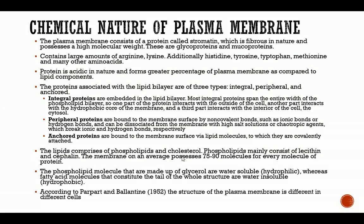Now, what is the chemical nature of the plasma membrane? Every living thing has a chemical composition. The plasma membrane consists of a protein called stromatin, which is fibrous in nature and possesses a high molecular weight. These are glycoproteins and mucoproteins.